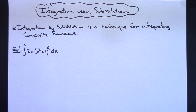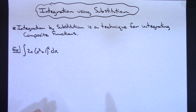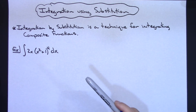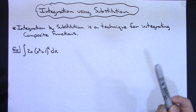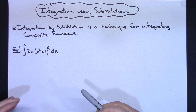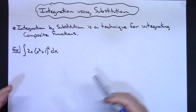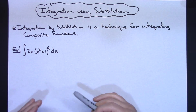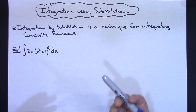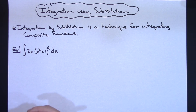In this video I'm going to be taking a look at integration using the substitution method, and we will be doing this for indefinite integrals. All of the examples that I do in this one will be indefinite integrals. You're going to want to use integration by substitution whenever you are dealing with some composite functions. If you've got an inside, clearly a composite function with an inside and outside, then this substitution method is going to work quite nicely.